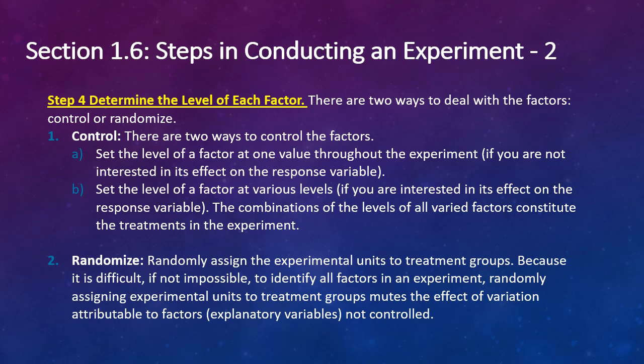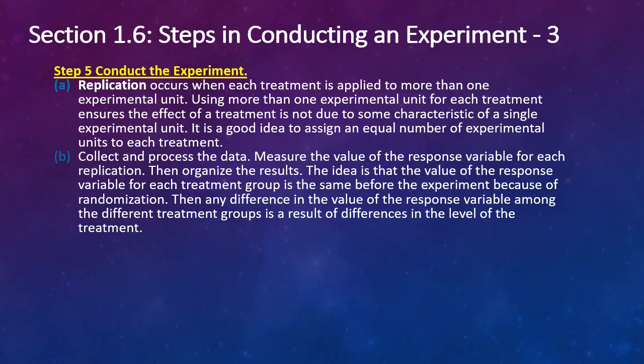Randomize. Randomly assign the experimental units to treatment groups. Because it's difficult, if not impossible, to identify all factors in an experiment, randomly assigning experimental units to treatment groups mutes the effect of variation attributable to factors, explanatory variables that are not controlled. Conduct the experiment. Replication occurs when each treatment is applied to more than one experimental unit. Using more than one experimental unit for each treatment ensures the effect of a treatment is not due to some characteristic of a single experimental unit. This is really important. It's a good idea to assign an equal number of experimental units to each treatment.